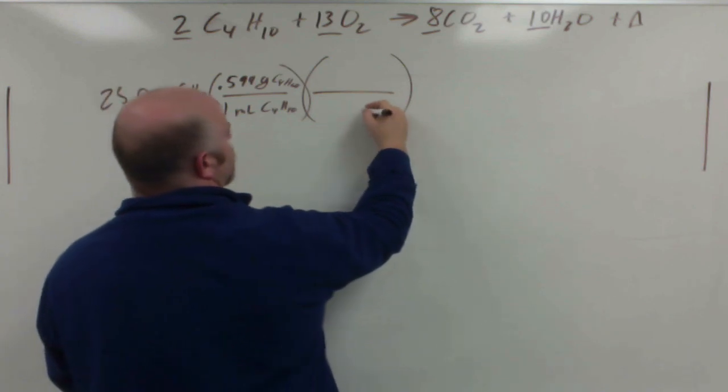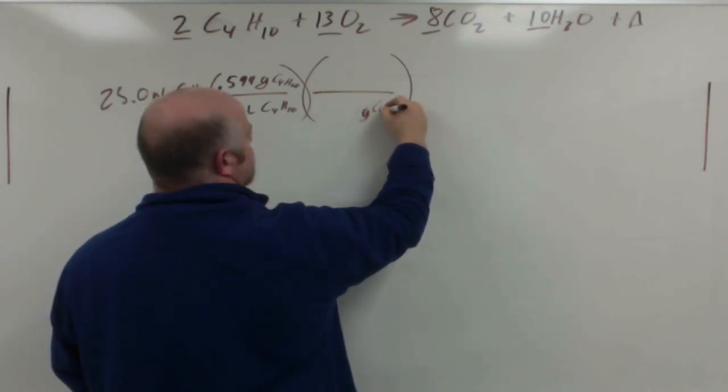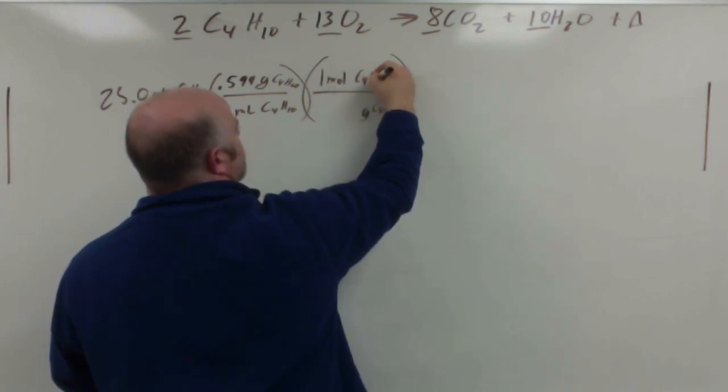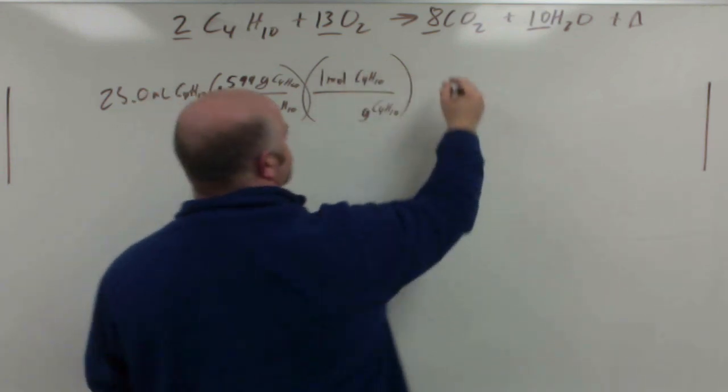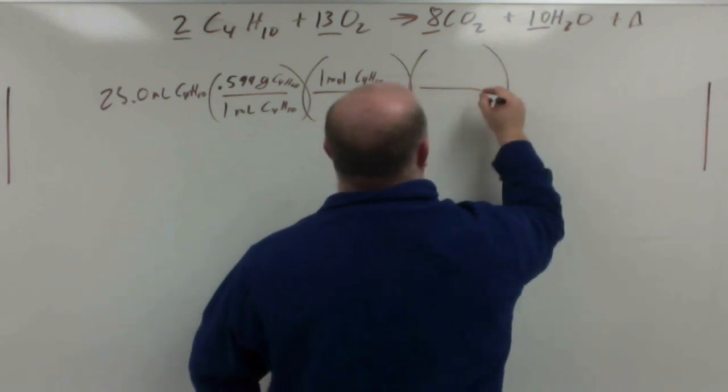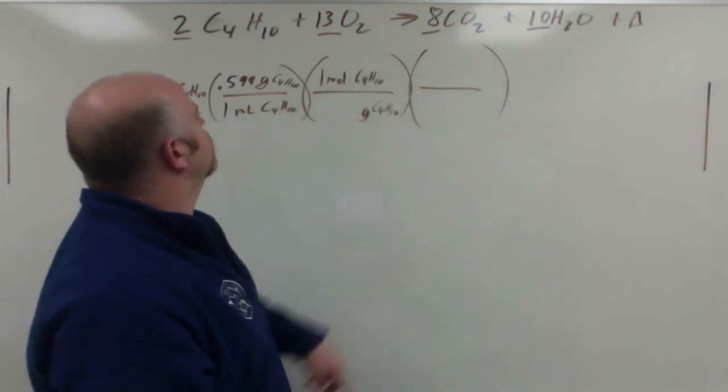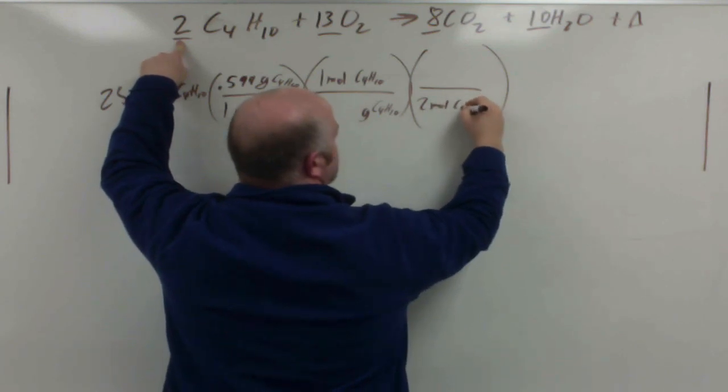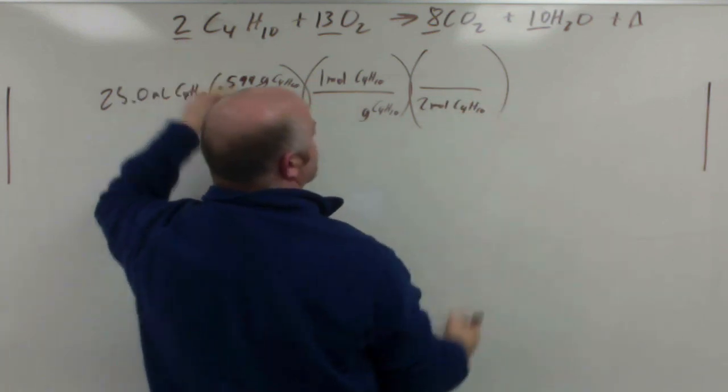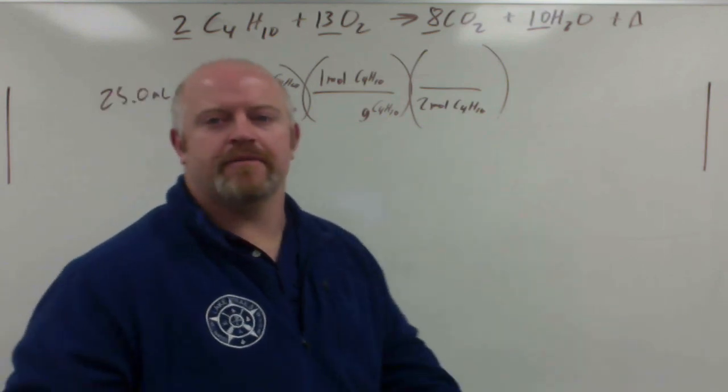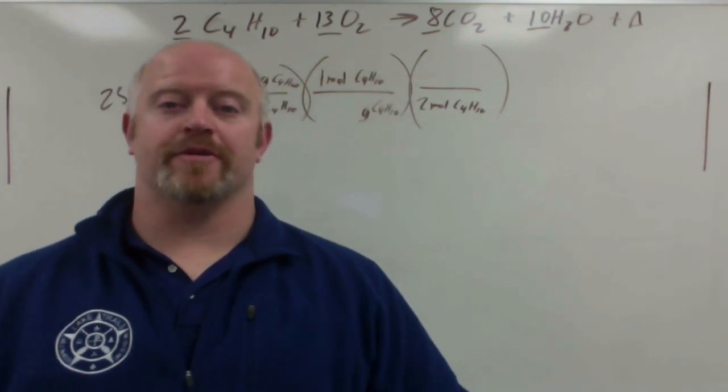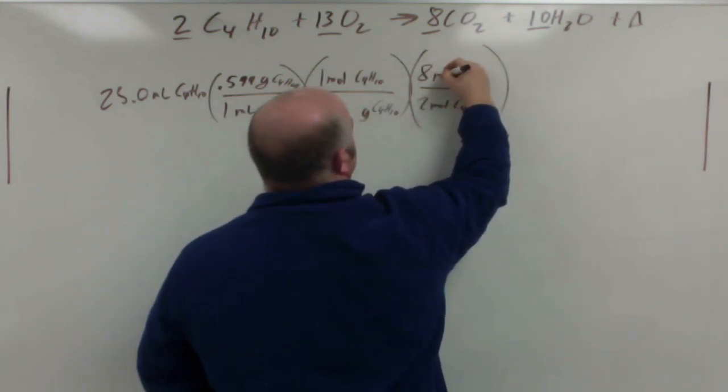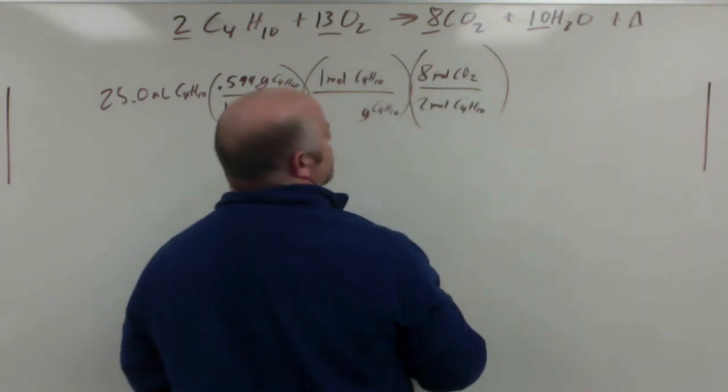And then we know that we can do our grams butane. For every one mole butane, and then we do our mole ratio. So butane is a 2, so I have 2 moles of butane. And the problem says how much carbon dioxide am I going to make? So I'm going to go to carbon dioxide, which is 8 moles of carbon dioxide.